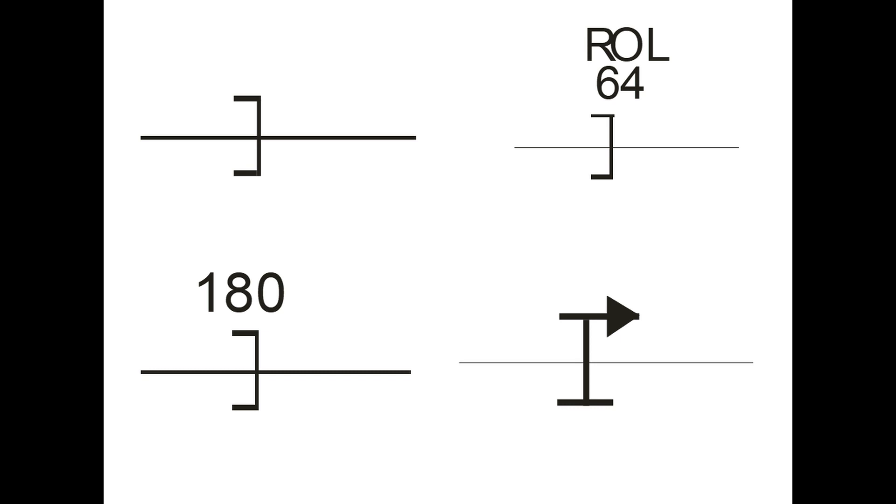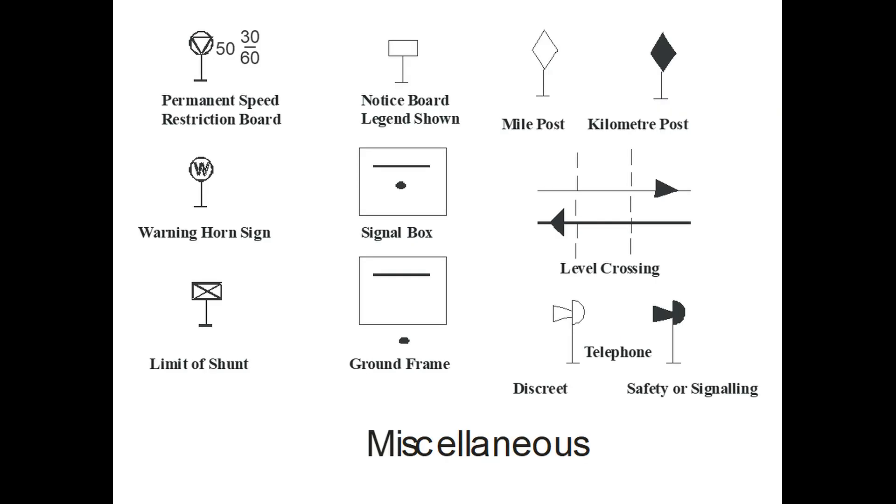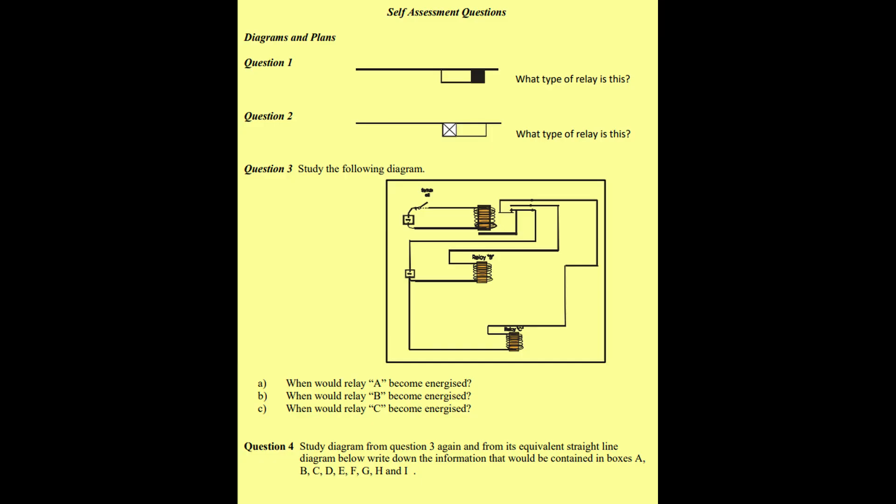There are track circuit symbols, AWS symbols and miscellaneous symbols. Finally, we show how routes are shown on sketches and plans. We can then test knowledge gained by going to the workbook and carrying out the self-assessment test and then checking the answers. That is the content covered in Section 2, Signalling Diagrams, Sketches and Plans.